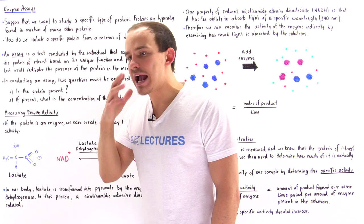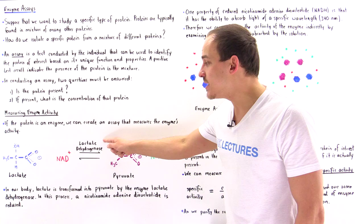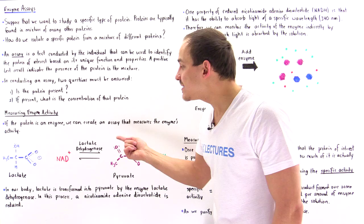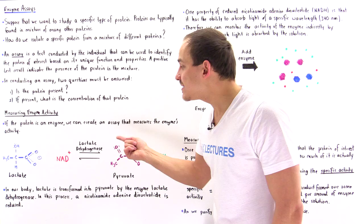In the next lecture, we're actually going to discuss how we purify our sample, beginning with the cell itself. Because if we want to study this particular enzyme, it's found inside the cell. So before we even conduct our assay, how do we isolate lactate dehydrogenase from that cell? We have to use a process known as differential centrifugation, which we'll discuss in the next lecture.